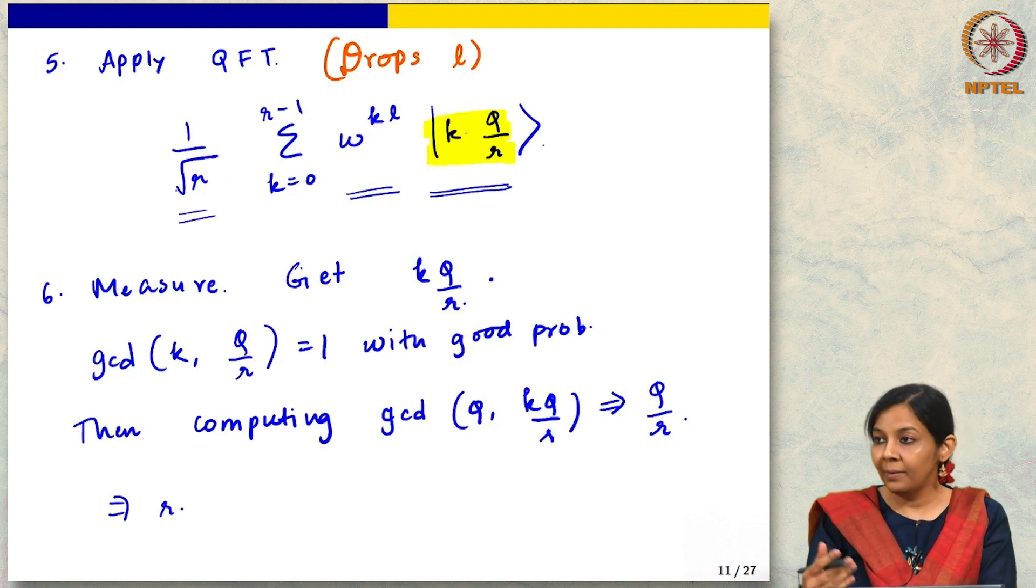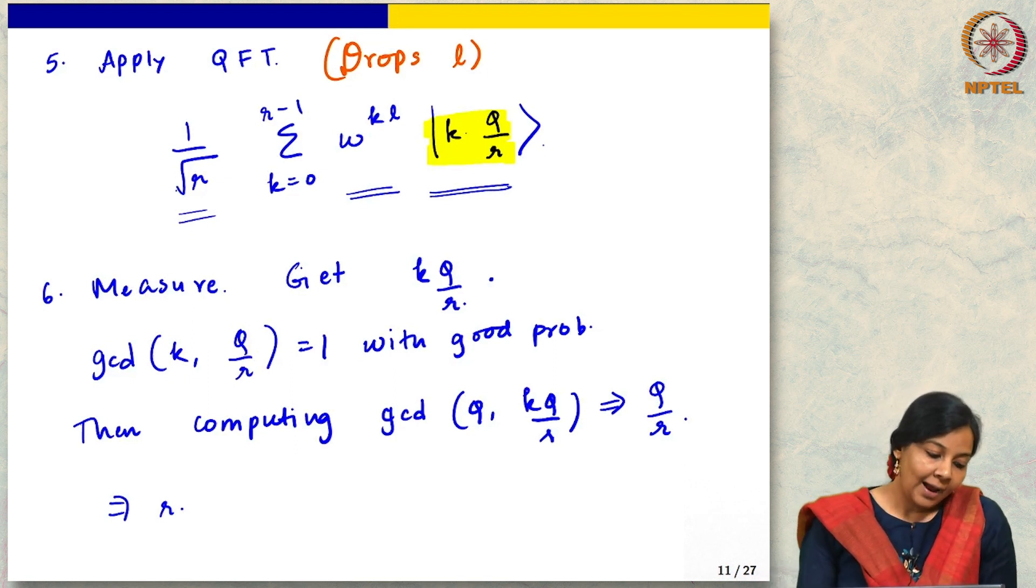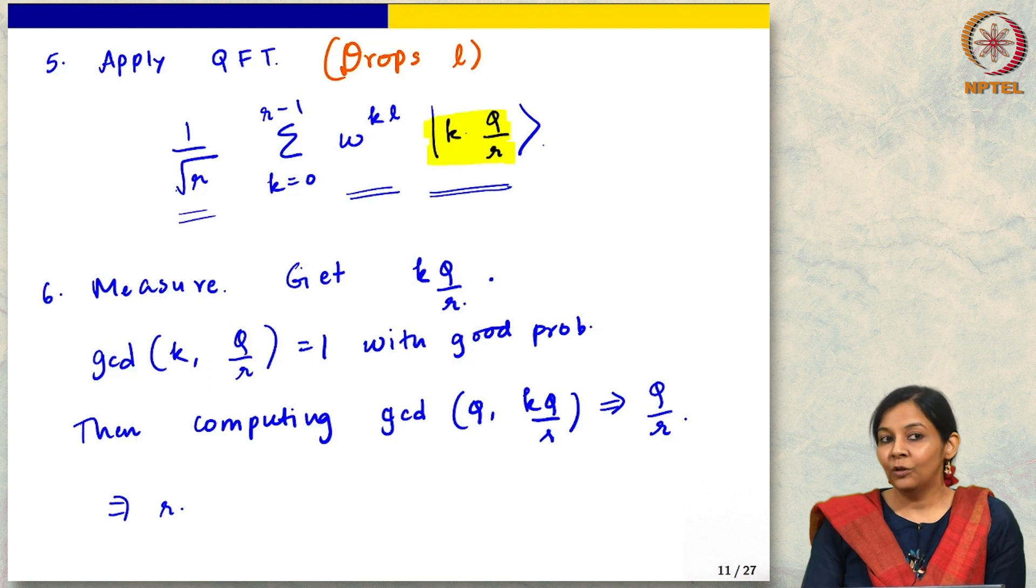It is the same idea that we have seen before. And yeah, as I was joking at the beginning of class, I am in fact cheating here because what I am showing you is the simplified analysis. When we assume that R divides Q, in that case, actually the algorithm and the analysis becomes extremely similar to Simon's over Zn, which we already did.